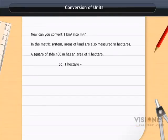So, 1 hectare = 100 × 100 m² = 10,000 m².